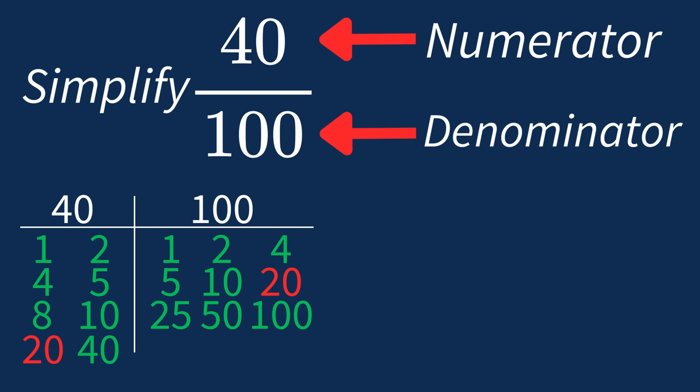Dividing the numerator 40 by 20 gives us 2. Dividing the denominator 100 by 20 gives us 5.